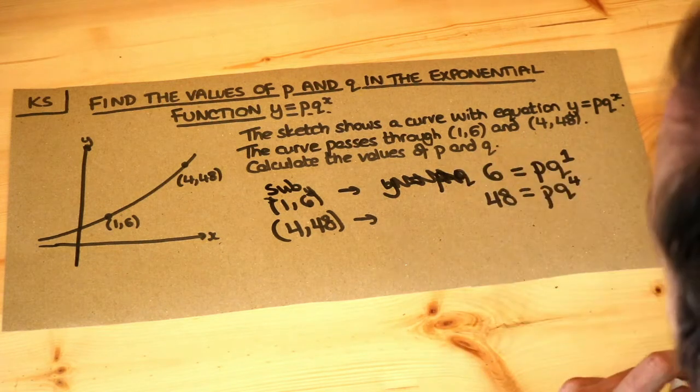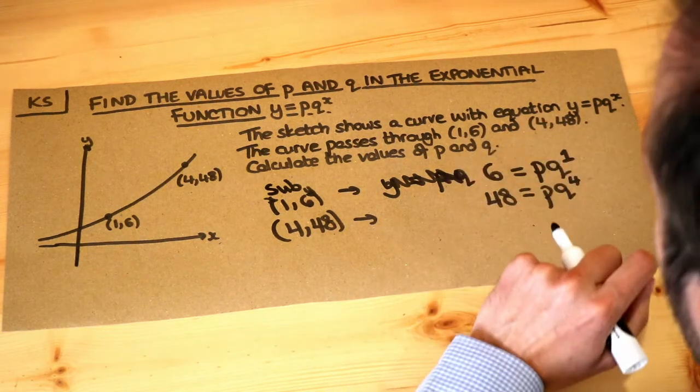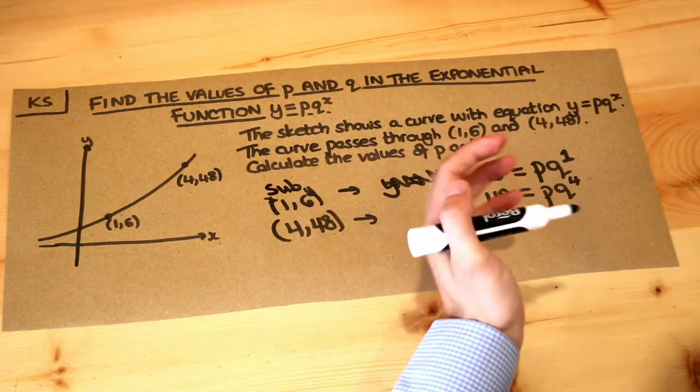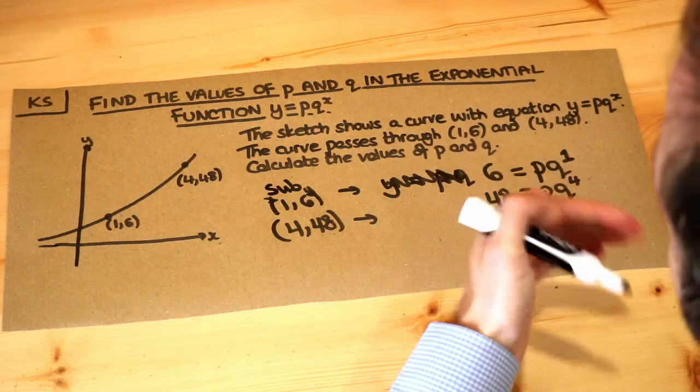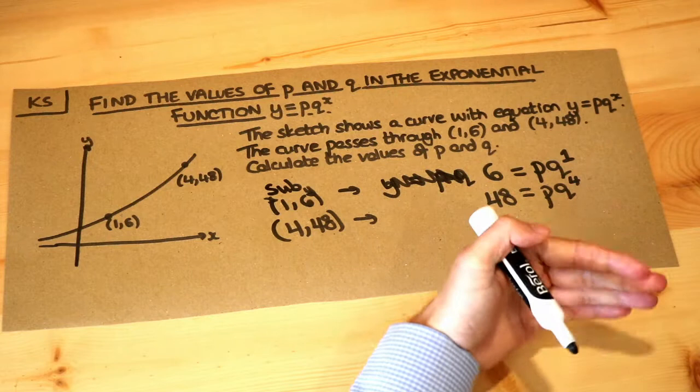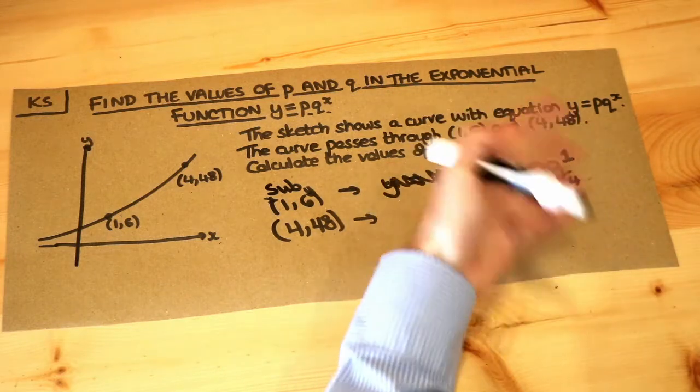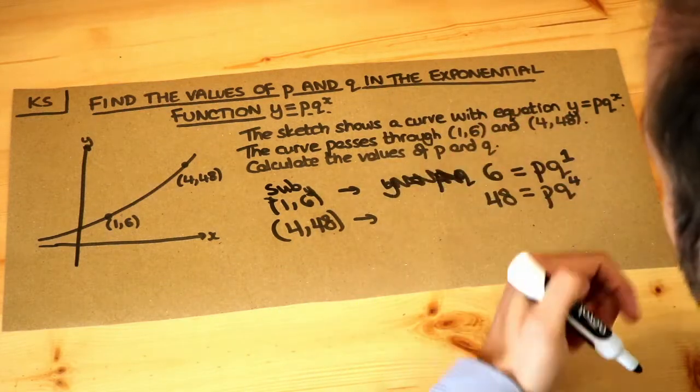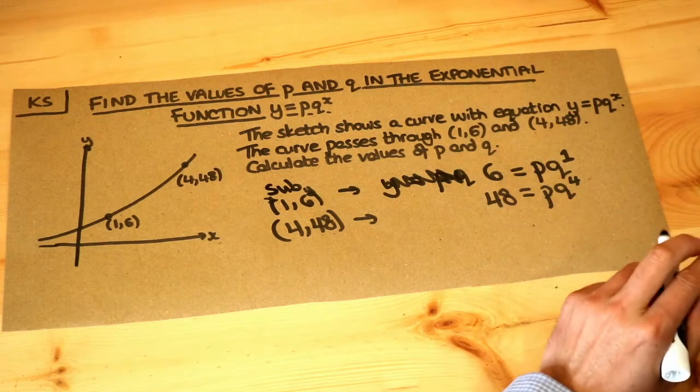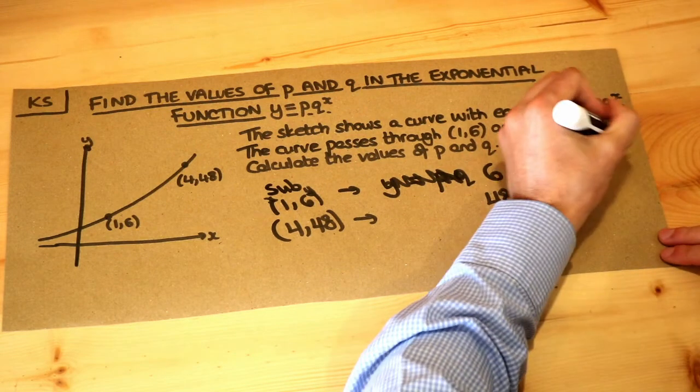Now these are known as simultaneous equations. We've got two equations, two unknowns. With linear simultaneous equations, you would have seen a method where you add or subtract the equations, which is known as elimination, to make something cancel. That's not going to work here, but what we could do is actually divide the two equations.